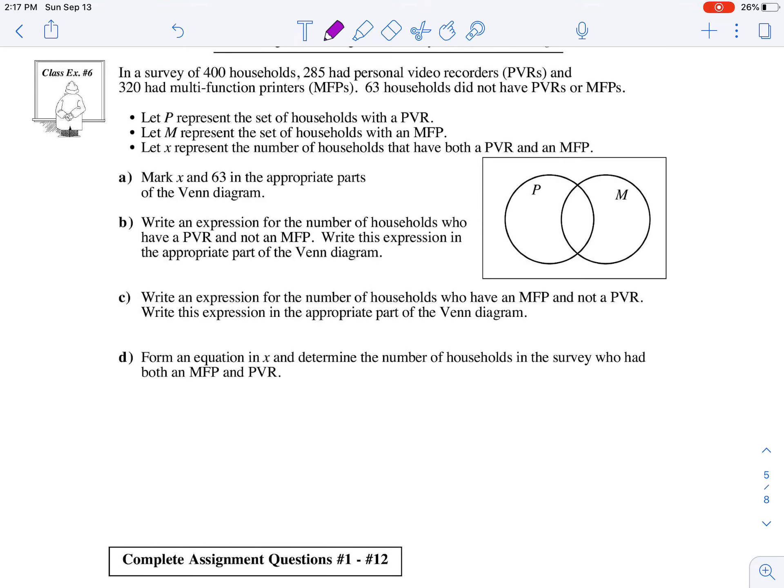So let P represent the set of households with a PVR. Let M represent the set of households with an MFP. And let X represent the number of households that have both a PVR and an MFP.